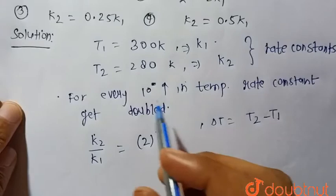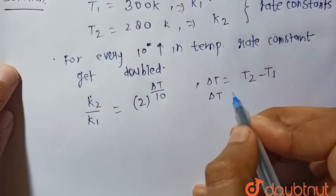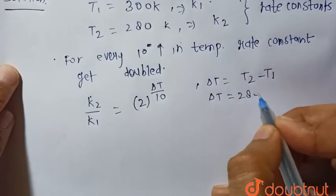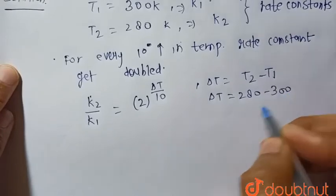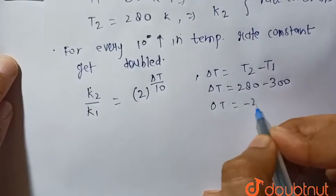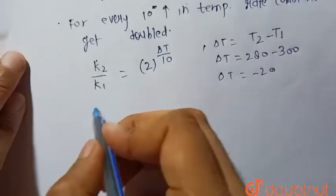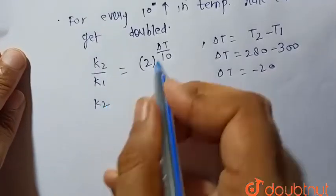So here we can see T2 is less than T1, so delta T is equal to 280 minus 300, that is minus 20. So by putting the value minus 20 here...